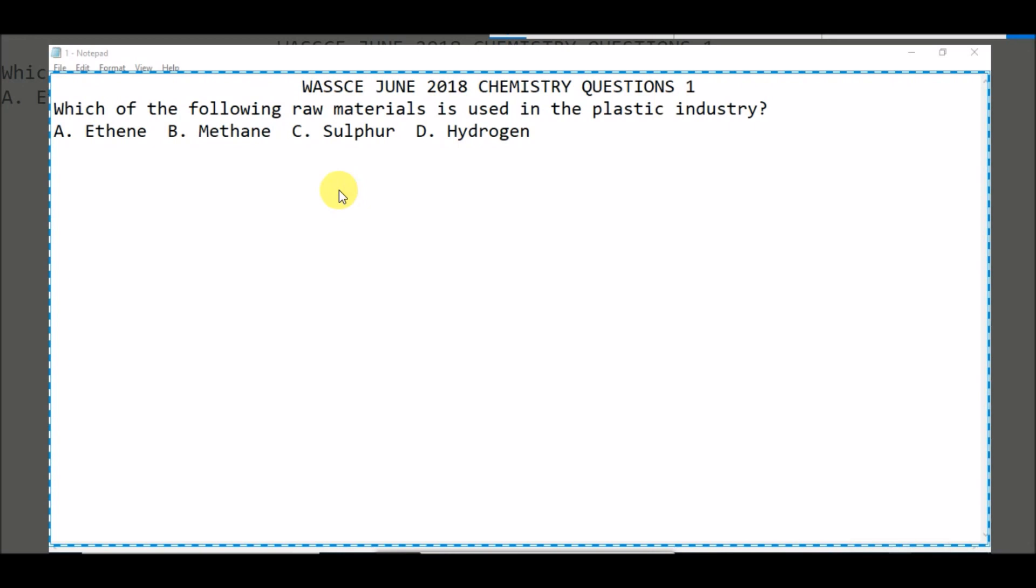Which of the following raw materials is used in the plastic industry? Option A: Ethene, B: Methane, C: Sulfur, D: Hydrogen. So what is the answer?